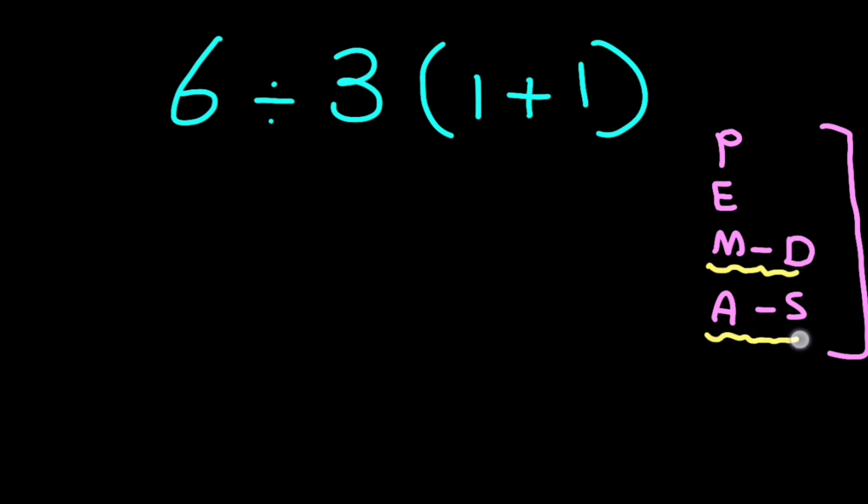So according to the PEMDAS, in first step we have one parentheses that we have to solve first, not this multiplication and this division. If we do this multiplication and this division first, it is wrong.